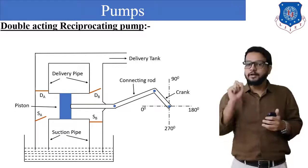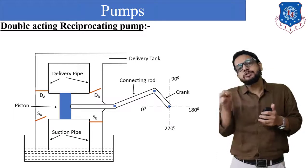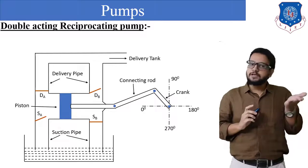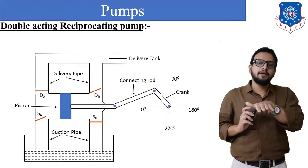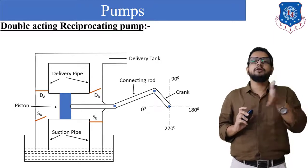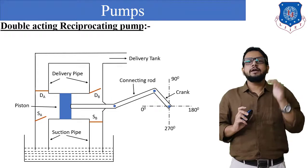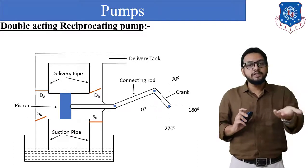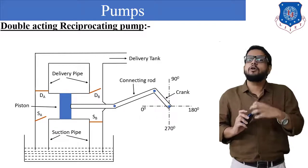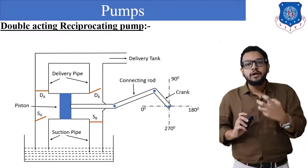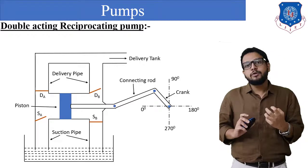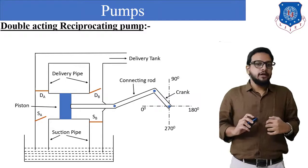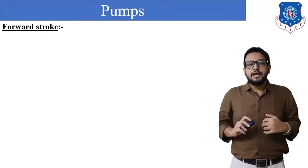When the crank moves from zero degrees to 180 degrees — the forward stroke — suction takes place on the left side and delivery on the right side. When the crank moves from 180 degrees to zero degrees — the reverse stroke — delivery takes place on the left side and suction on the right side. Because of this, a continuous discharge of water can be obtained, and there is a saving in mechanical power since in every stroke we get delivery of water into the delivery tank.